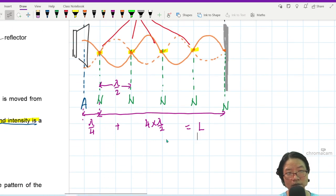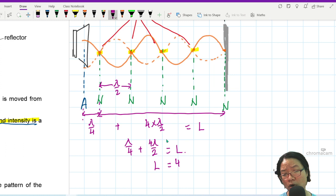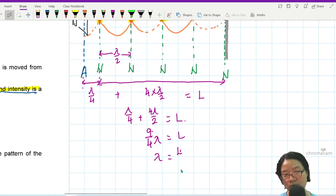If here to here is lambda over 2, then here all the way to here will be 1 lambda over 2, 2, 3, 4. 4 times lambda over 2. And what about here to here? Here to here is lambda over 4. And this will be equal to the length L. So lambda over 4 plus 4 lambda over 2 is equal to L. So my L now will be equal to, this is 8 over 4. 1 plus 8 is 9. So 9 over 4 lambda is L. So from here, we'll get lambda is equal to 4L over 9.